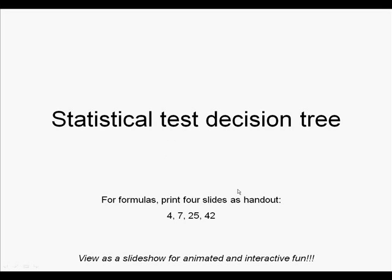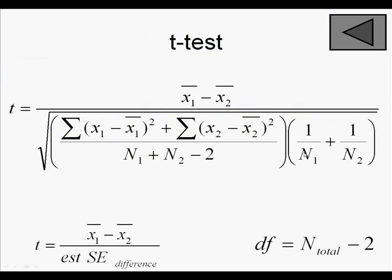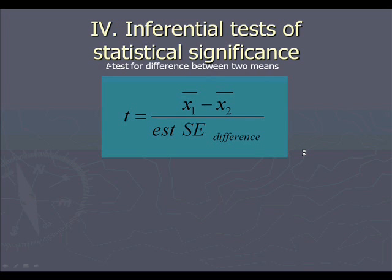If you'll notice at the bottom there, it says view as a slideshow for animated and interactive fun. Most of this PowerPoint is linked in some way to other parts of it. So all of these four tests here, univariate chi-square, bivariate chi-square, t-test, and correlation. The green boxes on the right here are dynamic so that if you click on them, it'll take you immediately to the section on whatever test you're looking at.